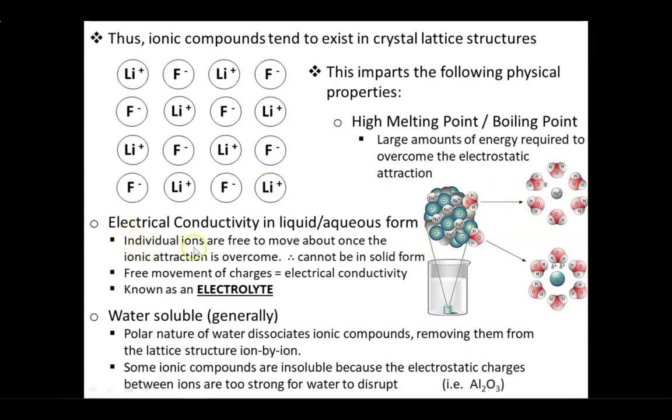Finally if you have individual ions that are freely moving around, either because they were dissolved in water for instance, or melted into a liquid format, as long as these ions are free to move, you have electrical conductivity. A solution that conducts electricity is known as an electrolyte.